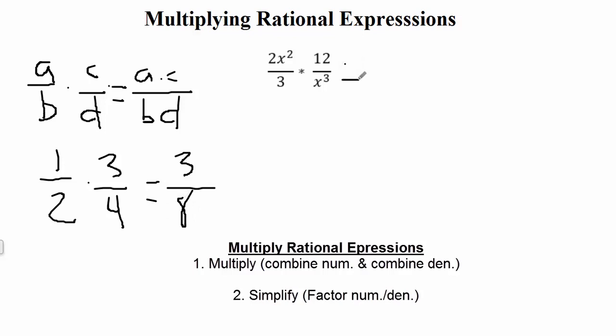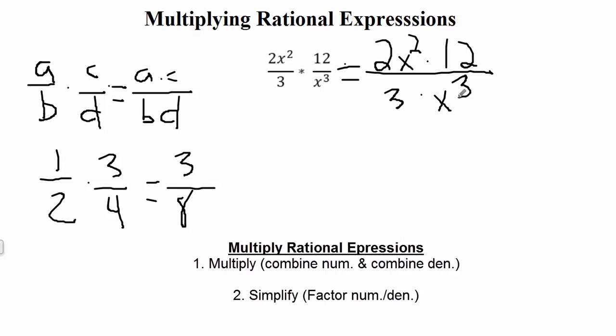Similar to that example, we multiply numerator times numerator — that's 2x² times 12 — over 3 times x³. We want to leave our factors like this and not go ahead and compute 2 times 12 to get 24, because after multiplying we need to simplify. Keeping things factored means we're really just combining everything into one fraction together.